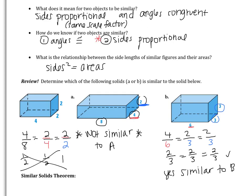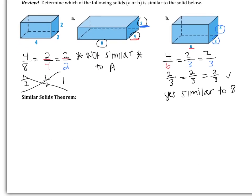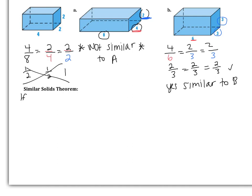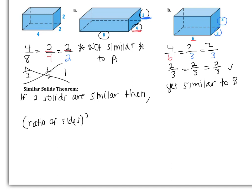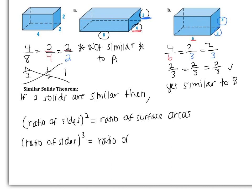None of that was new so far. What is new is the similar solids theorem. If two solids are similar, then the ratio of the sides squared will give us the ratio of the surface areas. Similarly, the ratio of the sides cubed will give us the ratio of the volumes. This makes sense: surface area is always units squared, and volume is always units cubed. So squaring the sides gives areas, and cubing the sides gives volumes.